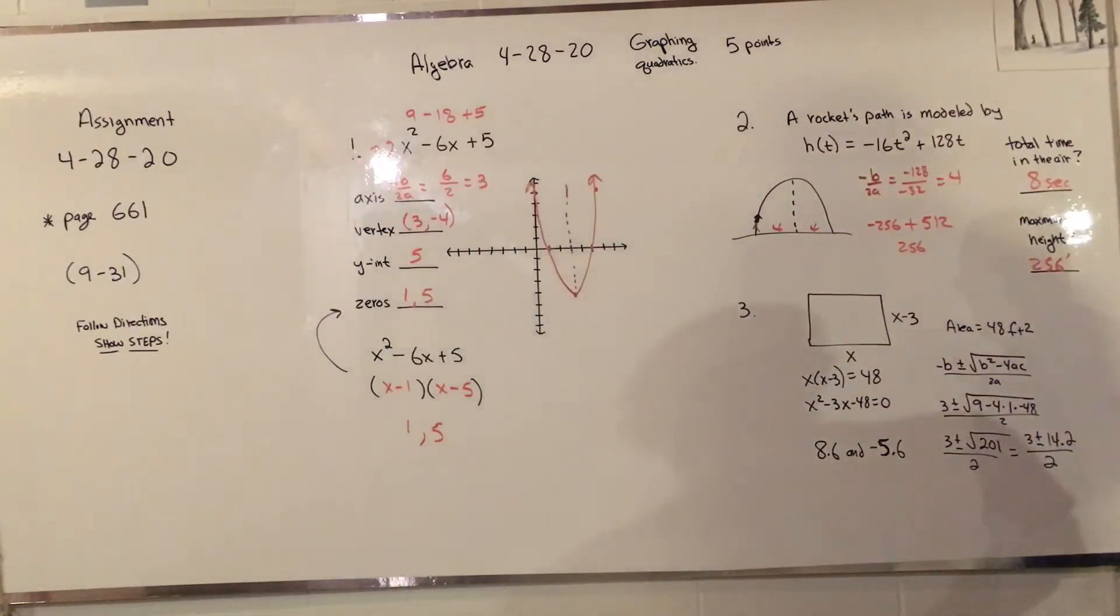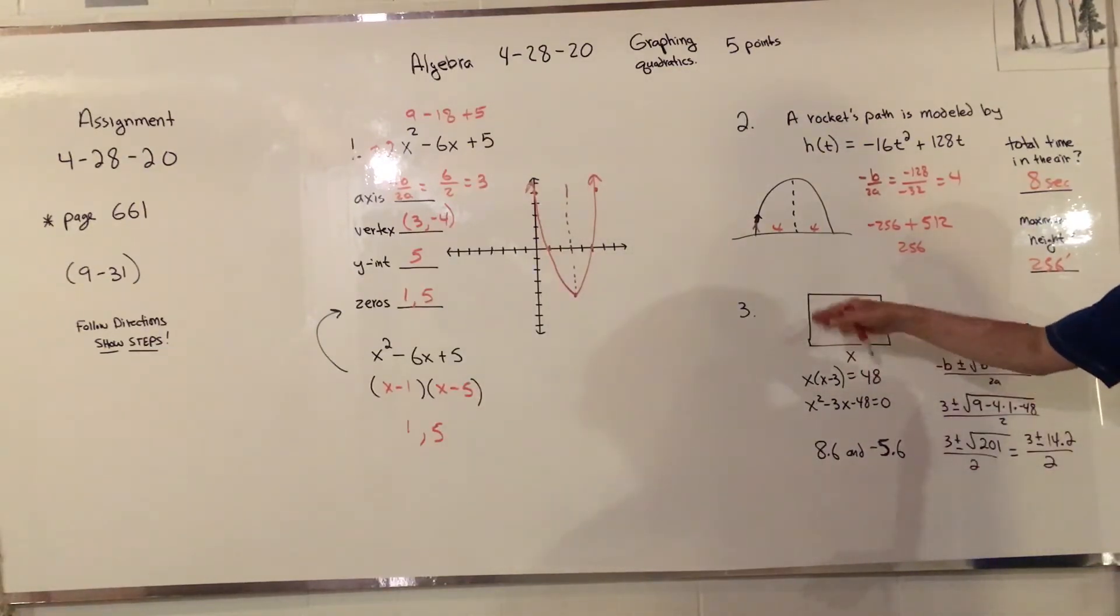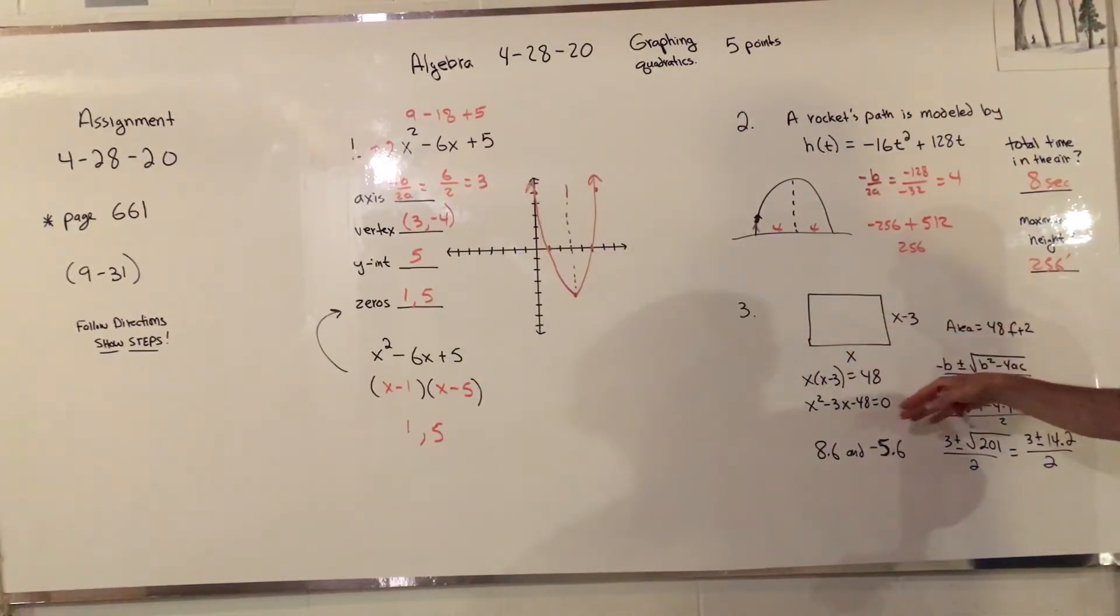The last one, it's X and X minus 3. I looked at this and it would not factor, and I can't use square root because there's 3 there. So I've got complete the square or I could use quadratic, and so I chose to use the quadratic and work that through and I found two answers, 8.6 and negative 5.6.